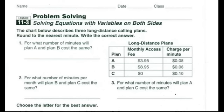On 11.3, we're solving equations with variables on both sides, but they don't give us any equations, so we have to make them. There's a type of problem in the real world where basically we're paying a fee for something. No matter how much we use that something, we pay an initial fee, like in a fitness club.